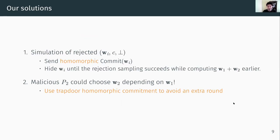In order to circumvent these two issues, our solutions can be summarized as follows. Instead of sending just a commitment, we employ a homomorphic commitment in order to carry out the exchange of commitments in the first round. This way we can hide the value of W until rejection sampling is successful. This also allows us to compute the sum of the first message thanks to the homomorphic property. For the second issue, we use a trapdoor homomorphic commitment in order to avoid an extra round, which I'll explain a bit later.